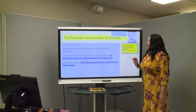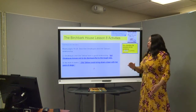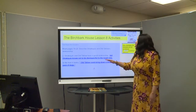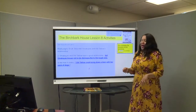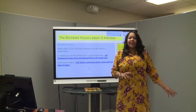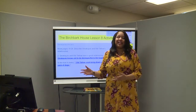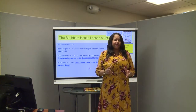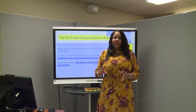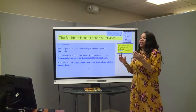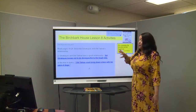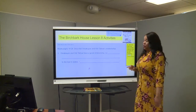Our anticipated response says: "Omakyus and Othello have a good relationship, but Omakyus knows not to be disrespectful to the tough lady." In the text it states: "Othello could bring down a bear with her pack of dogs." Think about it — when the yellow dog was growling at Omakyus as she went to Othello's house to get the scissors, Othello was not even afraid of that strong yellow dog. She said, "Didn't I tell you not to touch her? I warned you." She's warning the dog, which means she's not even scared of animals. So Omakyus knows not to bother Othello — to stay on her good side.